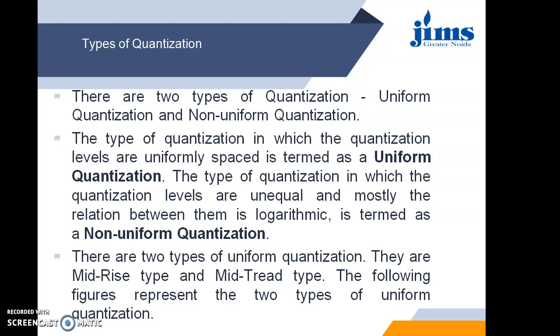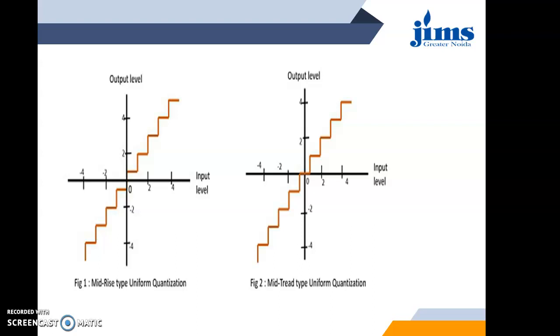Here we will be first considering the uniform quantization technique. The uniform quantizers are of two types: number one mid-rise and number two mid-tread. Both are uniform quantizers with uniform step sizes but the difference is that in case of a mid-rise quantizer the change in the amplitude is started at the origin at y-axis, that means from minus 0.5 to plus 0.5 at y-axis.